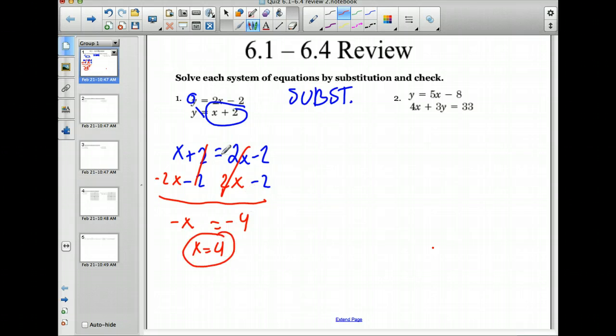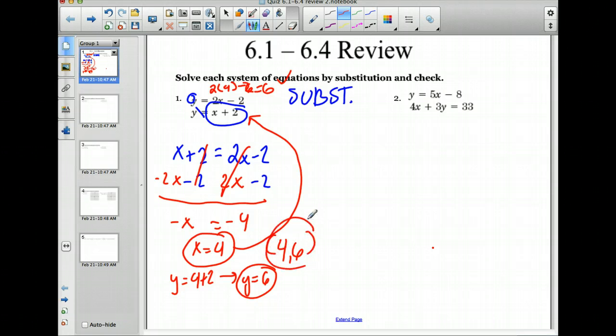So then we need to get our y value. So we'd plug that into either one of the equations. So y equals 4 plus 2. So y equals 6. Check it in the other equation. 2 times 4 minus 2 equals 6. So that works. So this is our answer. Or you can write it as an ordered pair. That works as well.